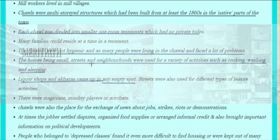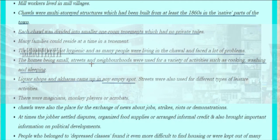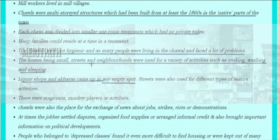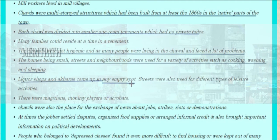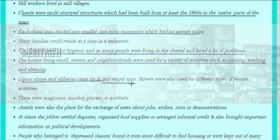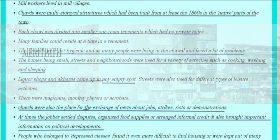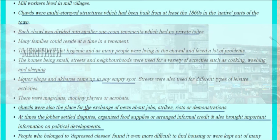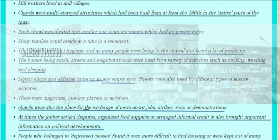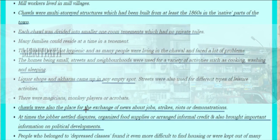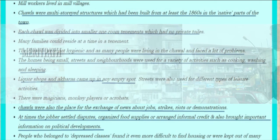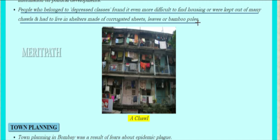Because homes were small, streets and neighbourhoods were used for a variety of activities such as cooking, washing, and sleeping. Liquor shops and akharas came up in any empty spot, and streets were used for different leisure activities — magicians, monkey players, and acrobats. Chals were also places for the exchange of news about jobs, strikes, riots, or demonstrations. The jobber settled disputes, organized food supplies, and arranged informal credit. People who belonged to the depressed classes found it even more difficult to find housing and were kept out of many chals, having to live in shelters made of corrugated sheets, leaves, or bamboo poles.